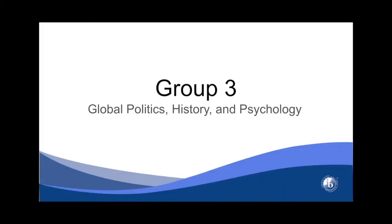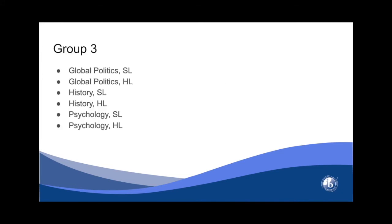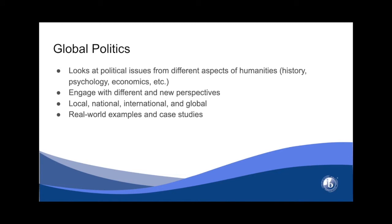This presentation will go over your options for your social studies course. You have quite a few options — all of our options for social studies are taught at the SL and HL level. Global politics and psychology are both mixed classes where SL and HL are taught together, while History SL and History HL are taught separately. Global politics, as the name suggests, will have you looking at political issues from different aspects of humanities — history, psychology, economics, and other social sciences. You'll be engaging with different and new perspectives, not solely focusing on United States politics, but politics all around the world and how those different political systems interact, with the primary basis being real-world examples and case studies.